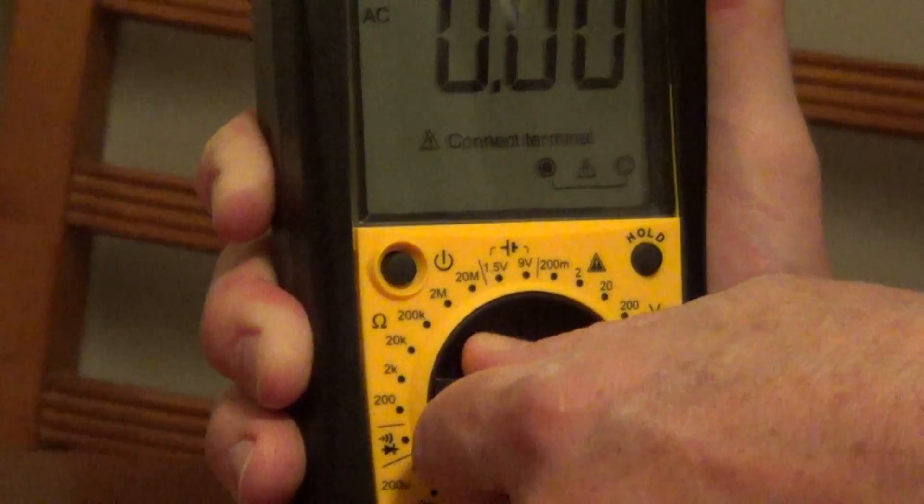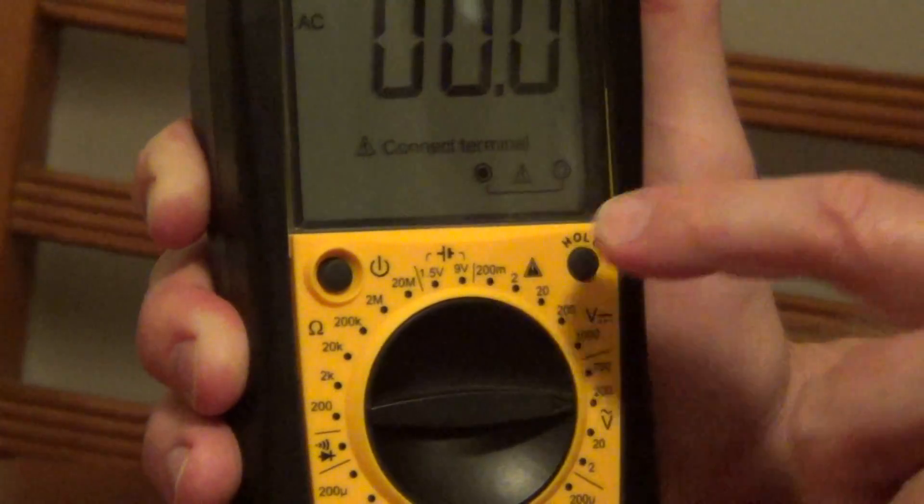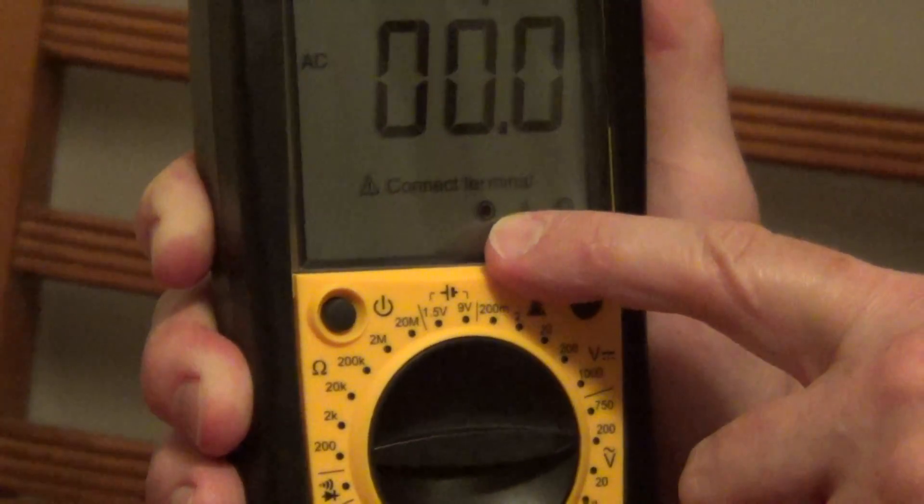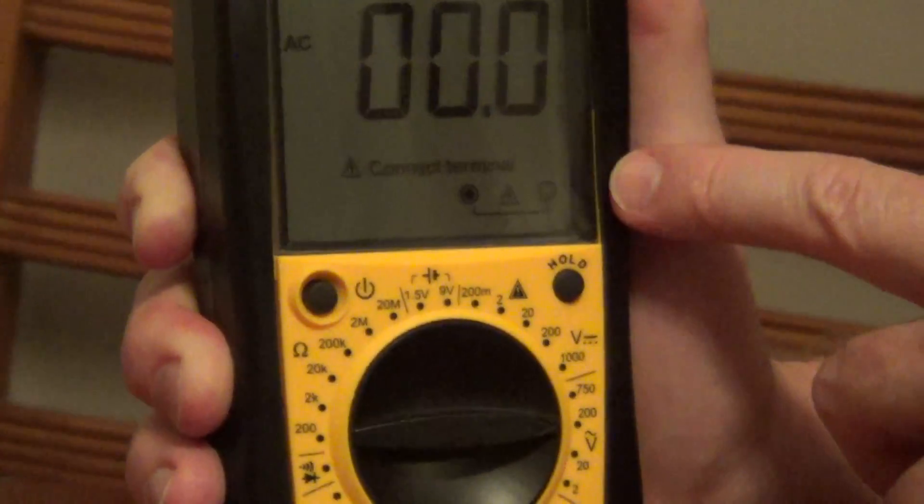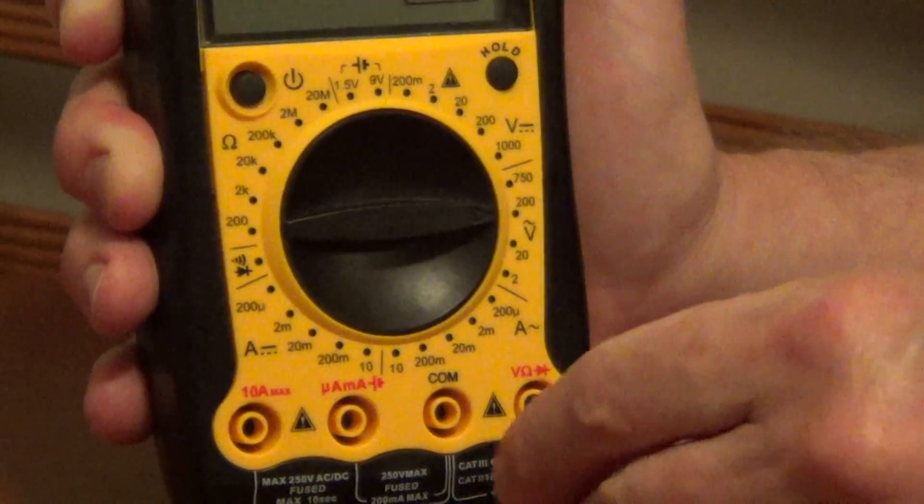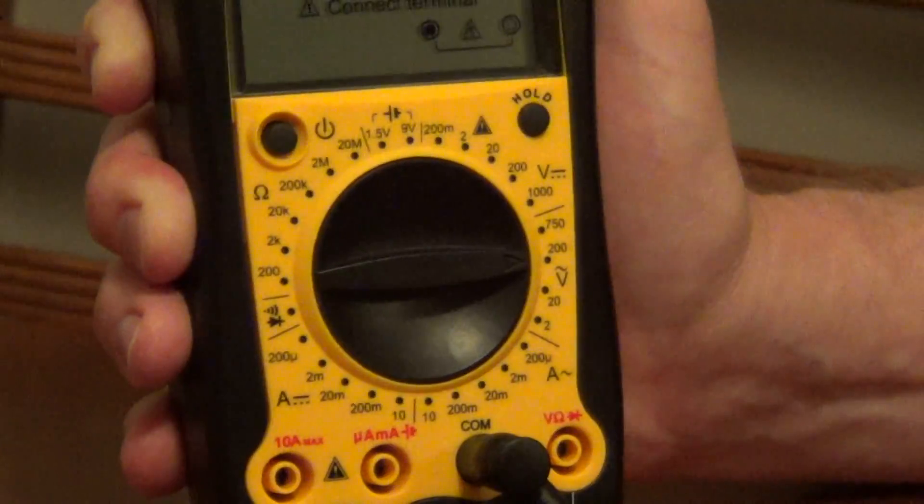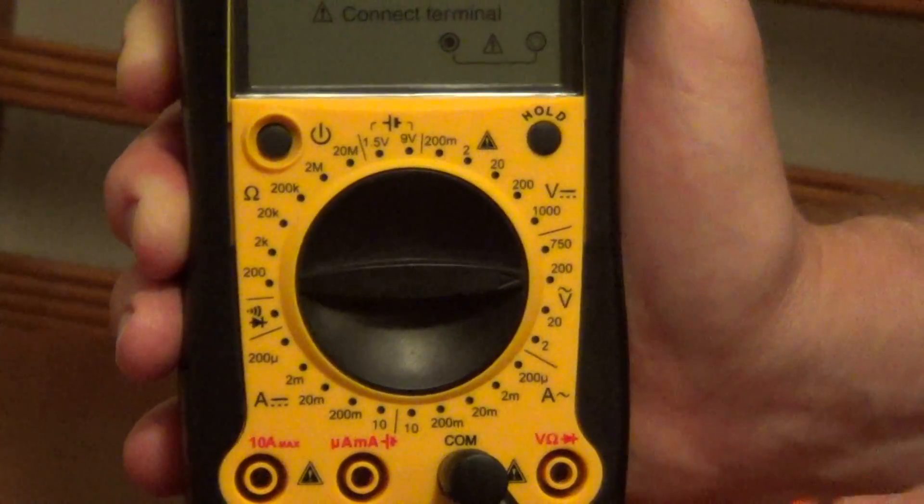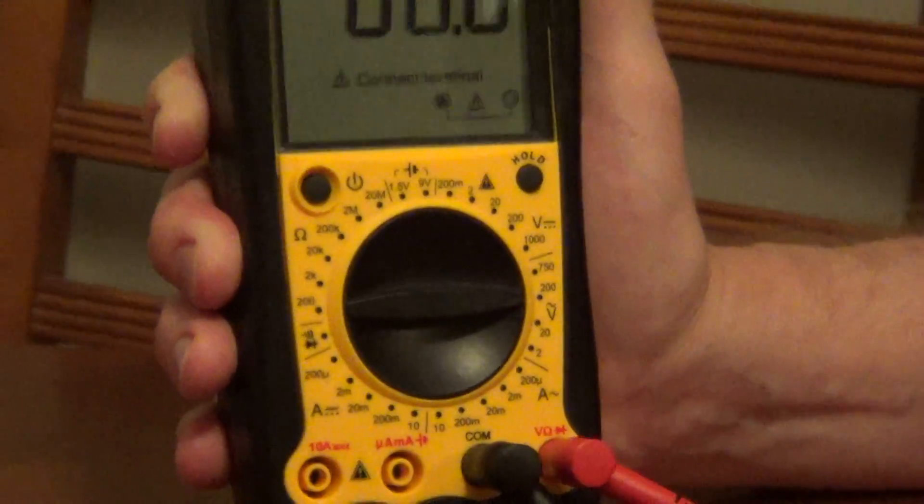Now if we're checking for volts alternating current, you can see we have our black plug, the symbol, and the red probe would be to the right of that. So again, we plug in our black probe on COM, we have our symbol, and then we plug in our red probe here.